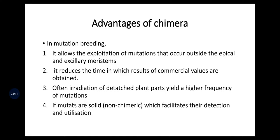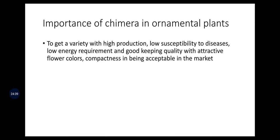Coming to the advantages of chimera. In mutation breeding, chimera allows the exploitation of mutations that occur outside the apical and axillary meristems. It reduces the time in which results of commercial value are obtained. Irradiation of detached plant parts yields a higher frequency of mutations. The importance of chimera in ornamental plants: it gives more attractive variegated flowers that catch the visitor's eye in botanical gardens. It also gives variation in leaves for aesthetic value, and contributes to high production, low susceptibility to diseases, low energy requirement, good keeping quality, compactness, and market acceptance.